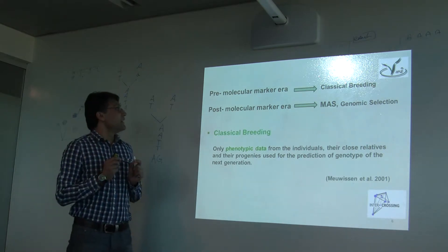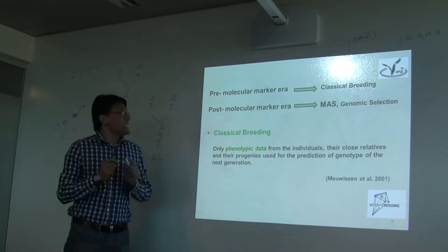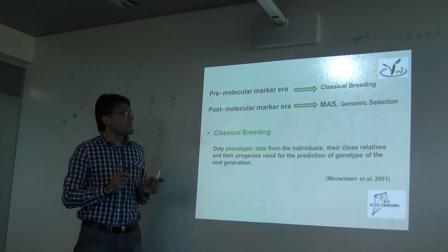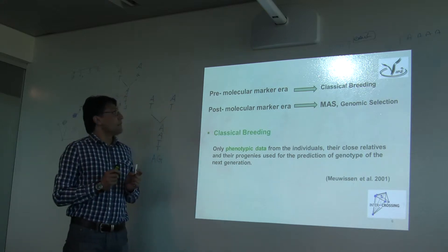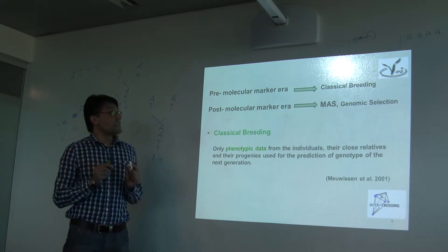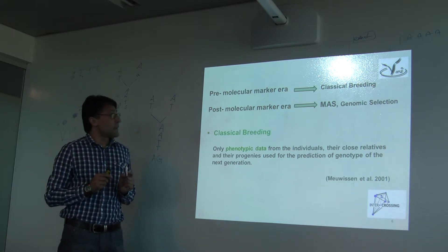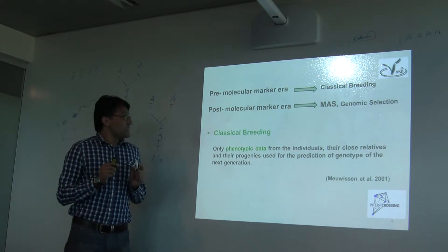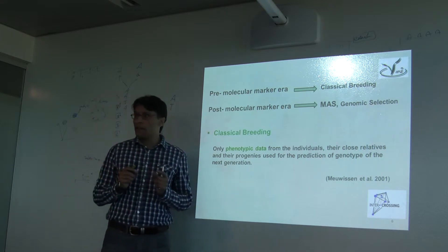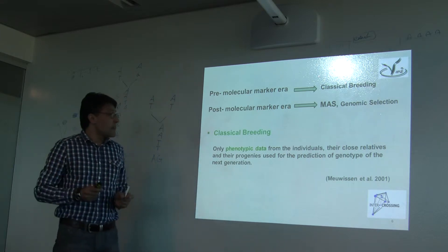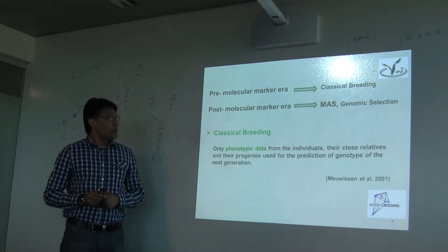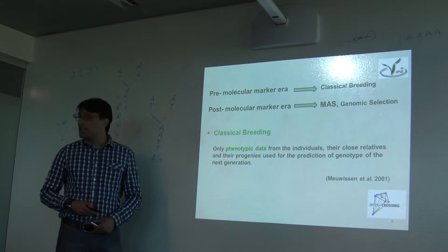Breeding can be classified into two categories, or two eras. We have classical breeding and we have the post-molecular marker era, which includes marker-assisted selection and genomic selection. In classical breeding, we take only phenotypic data — or field data — from individuals, their close relatives, or their progenies, and we predict the genotype of the next generation.